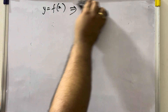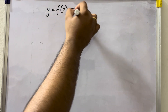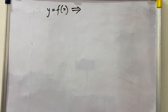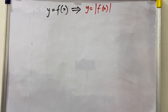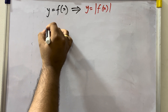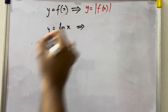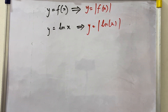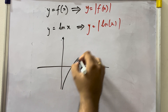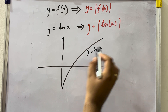Now we move to the next important transformation: y = f(x) transformed to y = |f(x)|. Although we have seen this in modulus classes — if you haven't watched my modulus series, please go back and watch those six videos, very important for JEE. For example, somebody has asked you to draw y = |ln(x)| from y = ln(x). Draw the graph of y = ln(x) first, with (1, 0) on the x-axis.